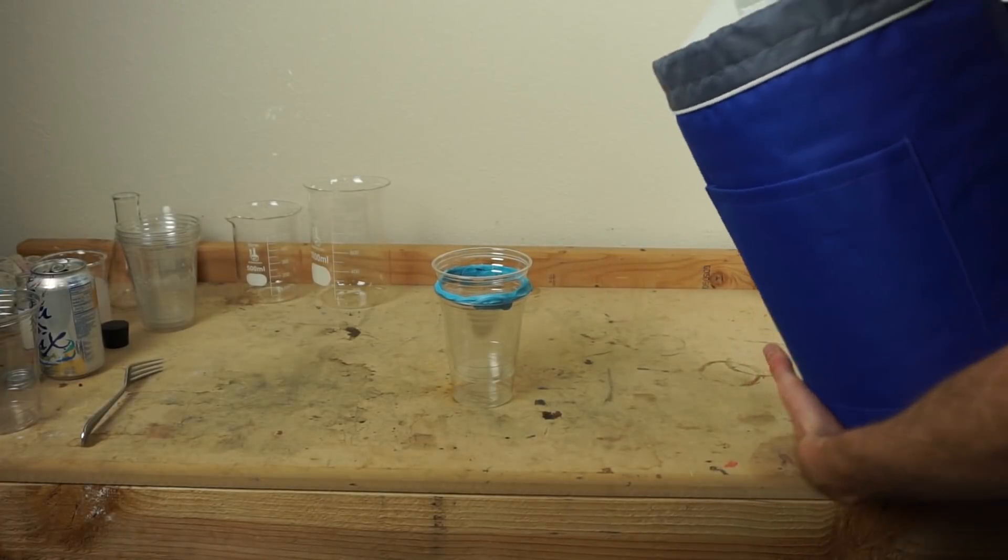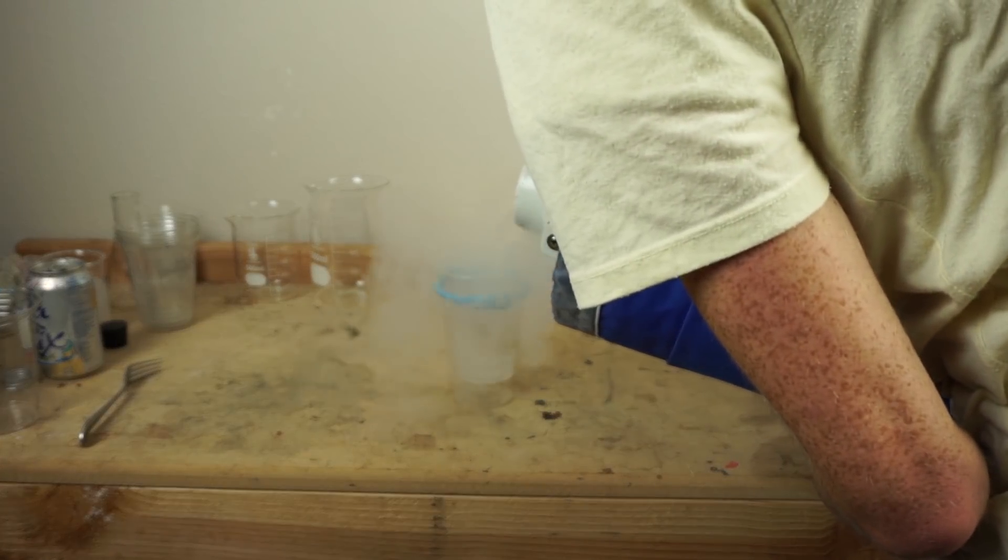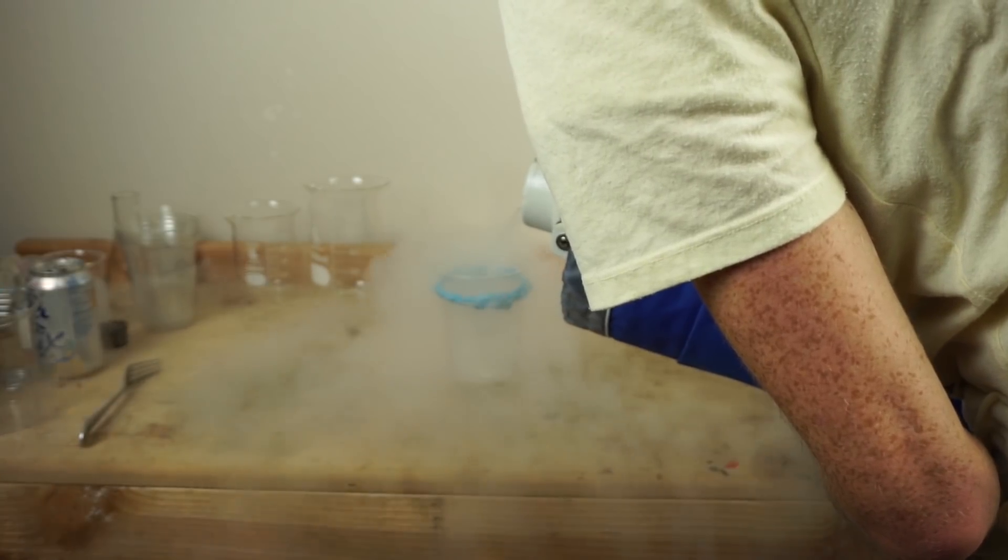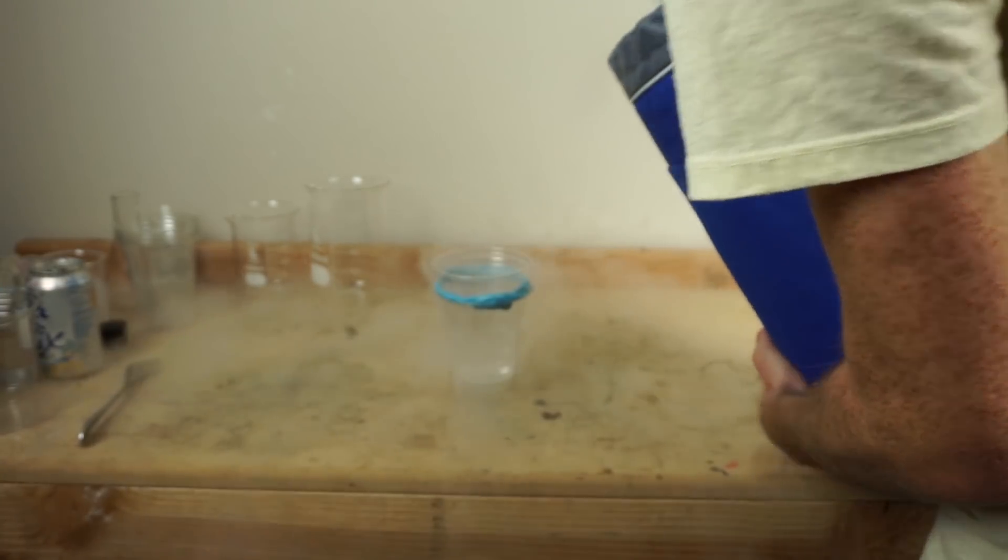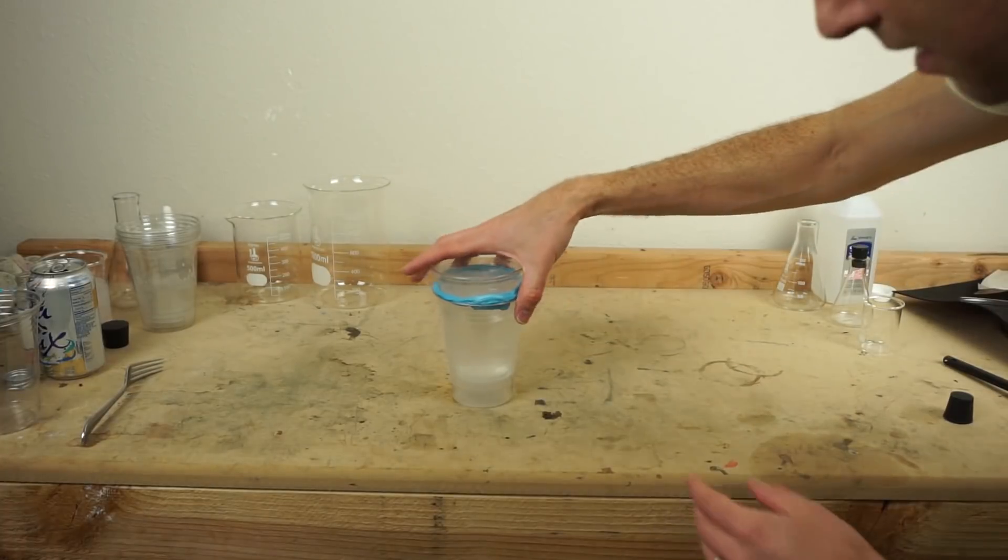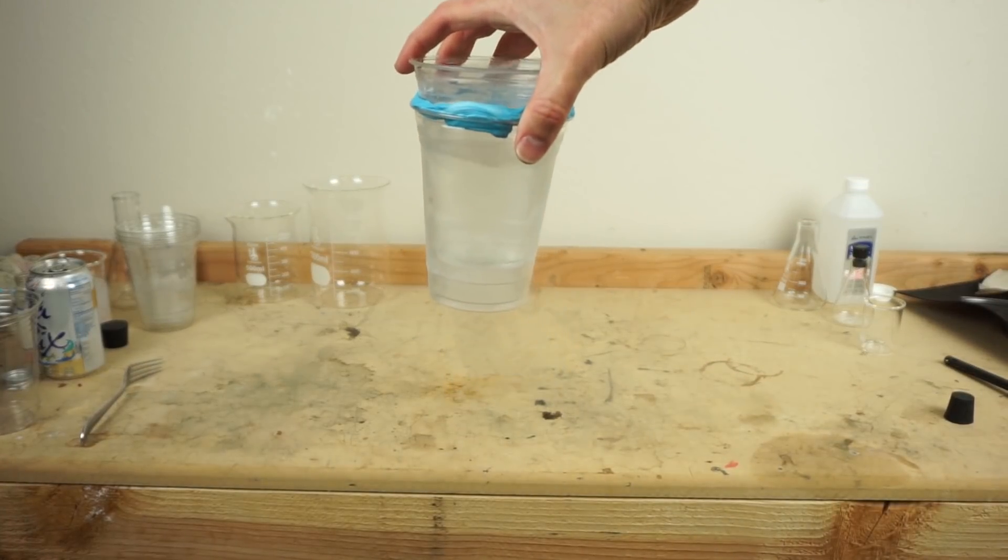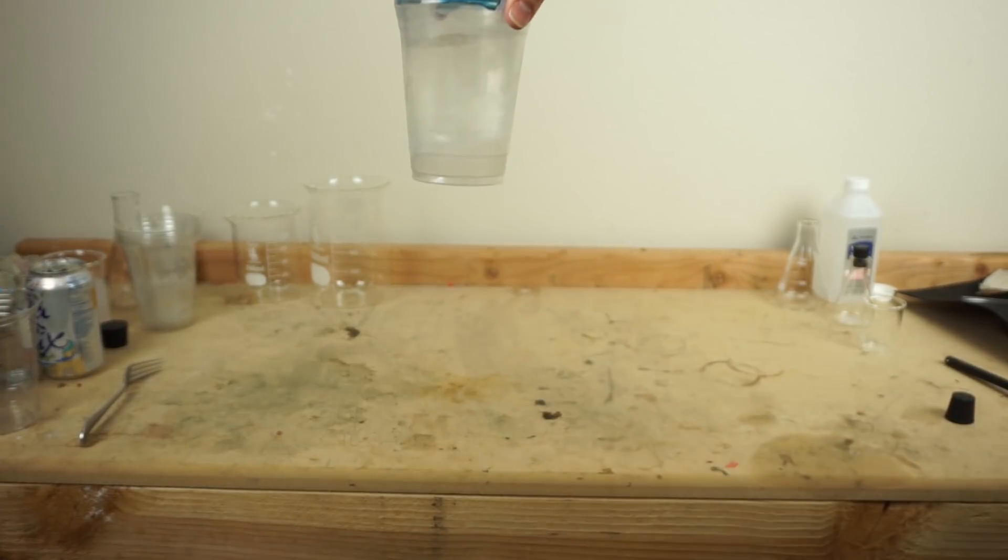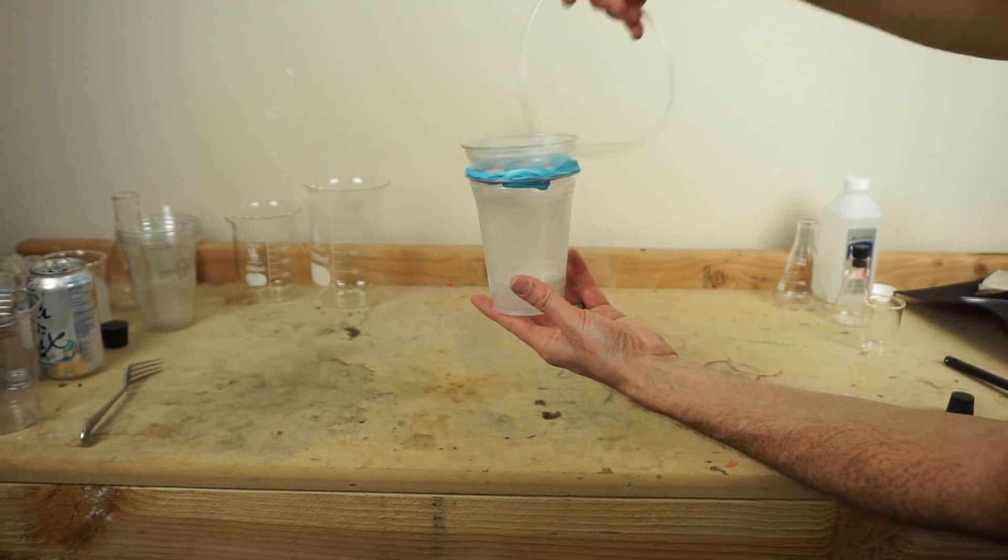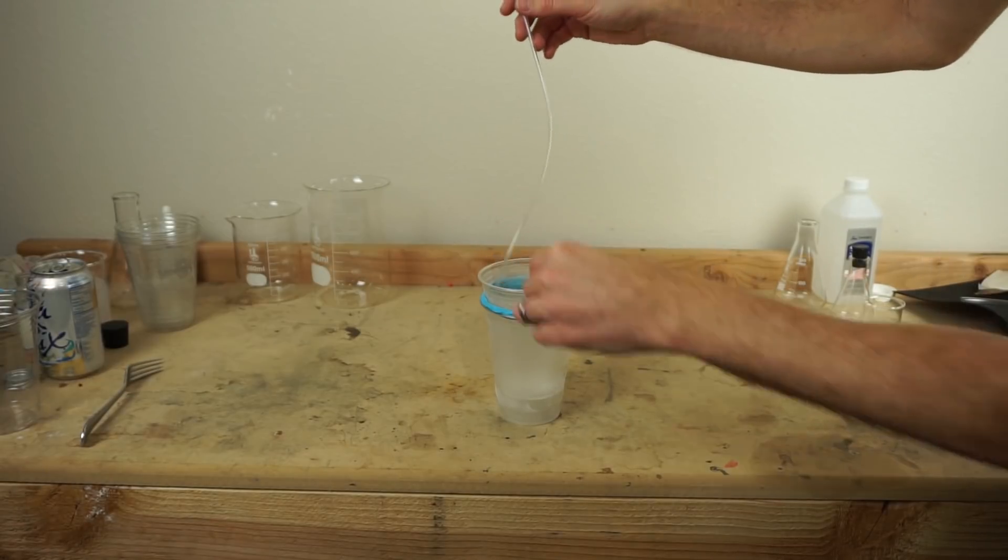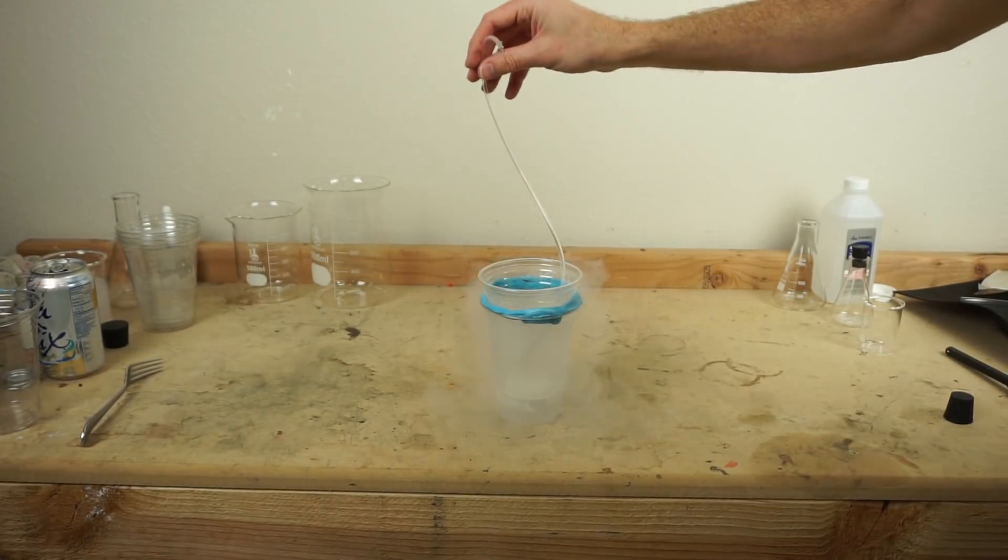So first let's pour some liquid nitrogen in our cup. So you can see it in there. So if this were water, it should be pretty easy to suck up through the straw. So first I'm going to get my straw in there and cool it down to the right temperature.